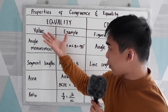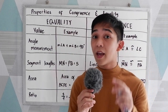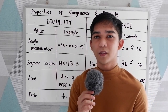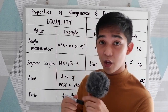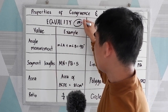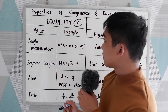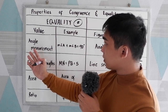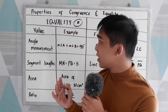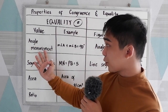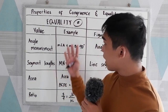So we have here our table. When we say equality, these are the relations that we can express in numbers. Our root word is 'equal,' so we are going to use the equal sign. We use equality, by definition, for anything we can express in numbers, such as angle measurement, segment length, area, and ratio.